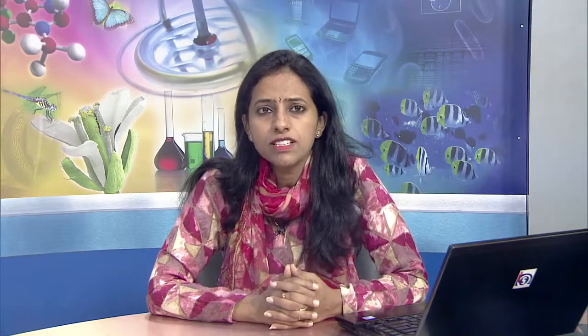The details of the investment policy or its review shall be submitted to the authority within 30 days of the decision. The authority may call for further information from time to time as it deems necessary and in the interest of the policyholders. There are various accounts related to life and general insurance business. These include: the balance sheet, a revenue account which is the policyholders account for life insurance, revenue accounts for fire, marine, and miscellaneous in case of general insurance, a receipts and payments account for cash flow, and a profit and loss account for the shareholders account.